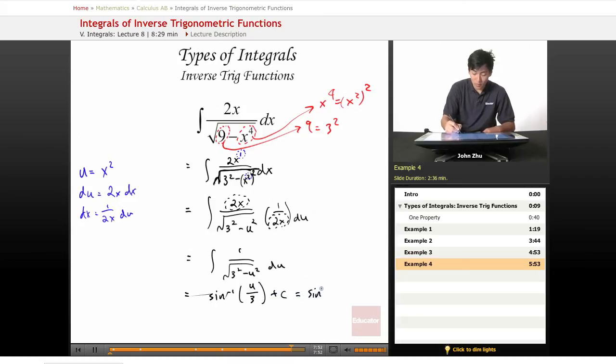And get inverse sine of u over 3 plus c. And replace the u. Inverse sine of x squared over 3.